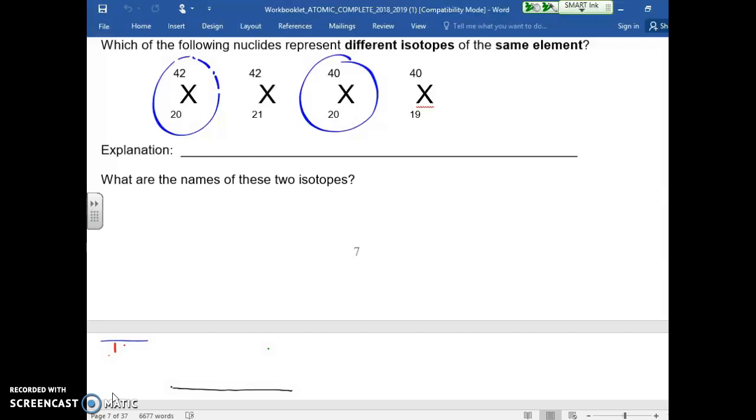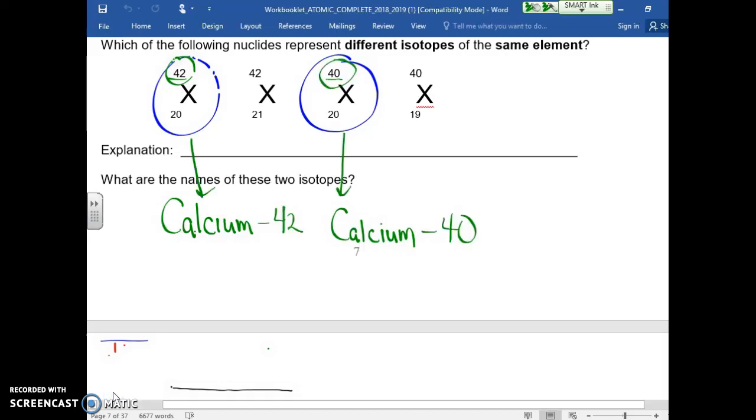A final question I can ask is, what are the names of these two isotopes? Well, they're both atomic number 20, so they're both calcium. But they're not identical, are they? They have different mass numbers. So I need to incorporate the mass numbers into the name by adding a hyphen and a mass number.